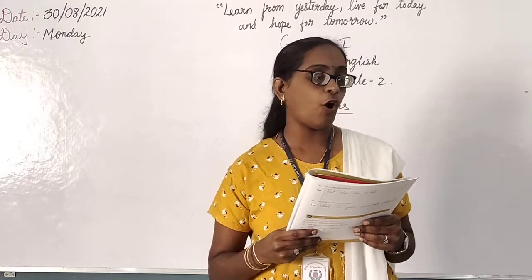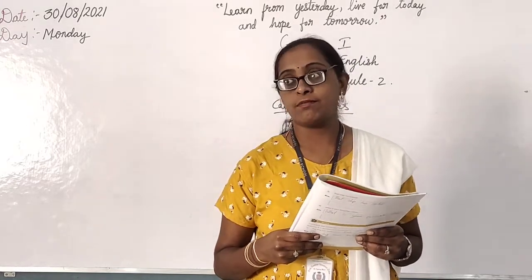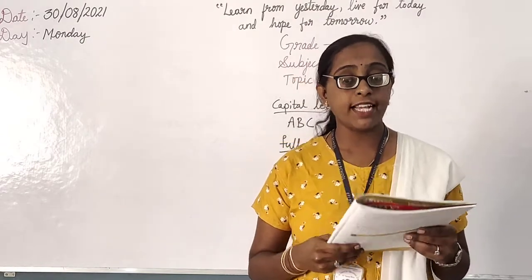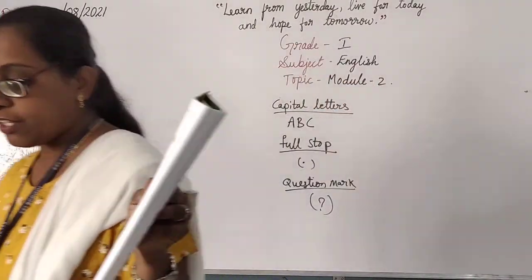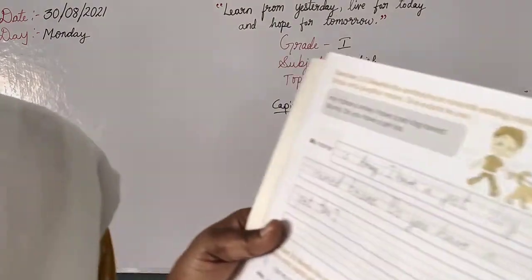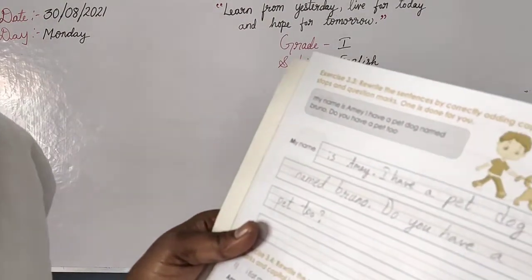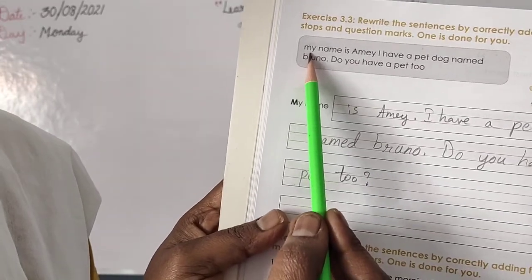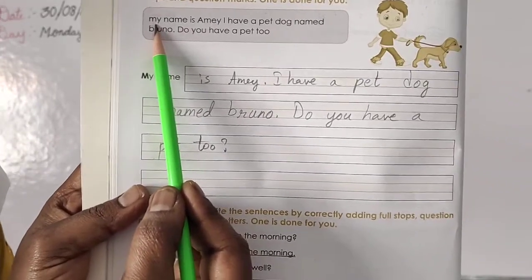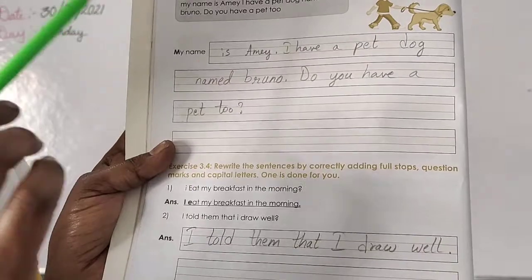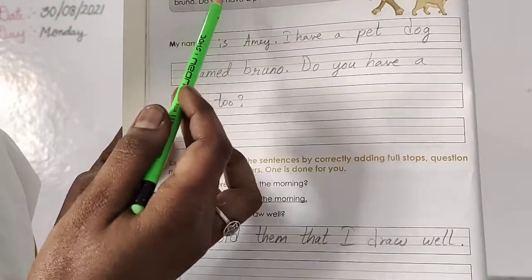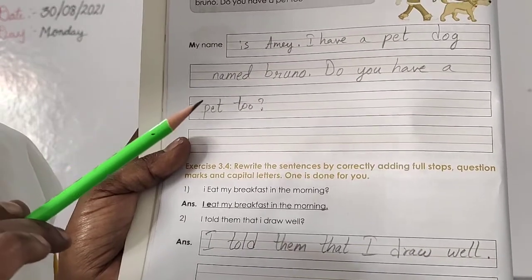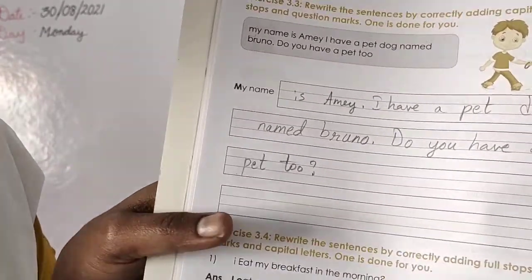But that sentence is not correct. See, starting there is no capital letter, right? Whenever you are starting the sentence, you should start with the capital letter. This is not a capital letter. So you have to rewrite again. There is no full stop, there is nothing — question mark also. So let us see how we will do that. Write along with me, children.